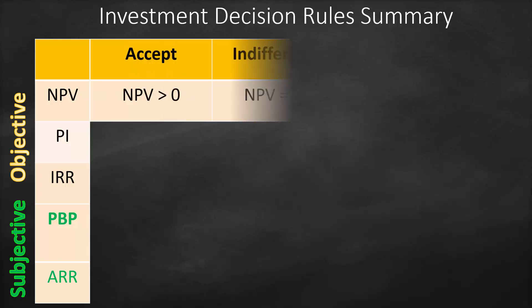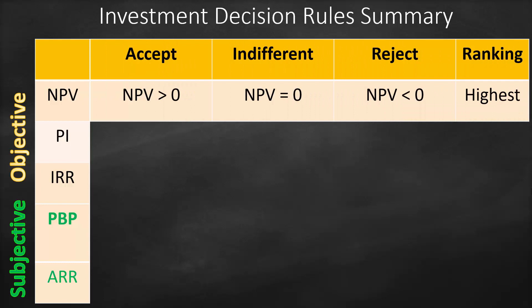For objective measures, we have a benchmark. For NPV, if it is positive, we will accept the project because it will create value. If NPV is equal to zero, we are not going to have value creation but not value destruction either — we will be indifferent. If NPV is lower than zero, we will reject the project because this is an example of value destruction.